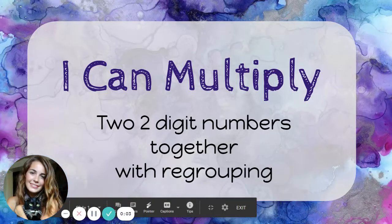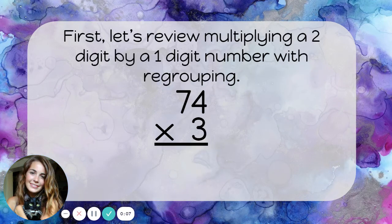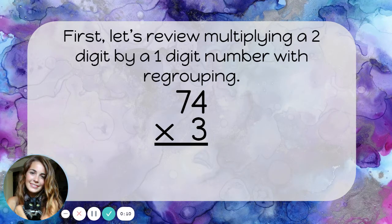I can multiply two two-digit numbers together with regrouping. First, let's review multiplying a two-digit by a one-digit number with regrouping.